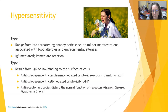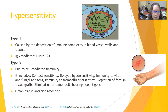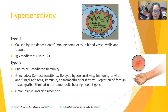Type 3 hypersensitivity is caused by deposition of immune complexes in blood vessel walls and tissues. In Goodpasture syndrome, immune complexes deposit in the basement membrane, and neutrophils attempting to remove them destroy the basement membrane. These are IgG immune complexes, and this is one of the primary mechanisms in lupus and rheumatoid arthritis.